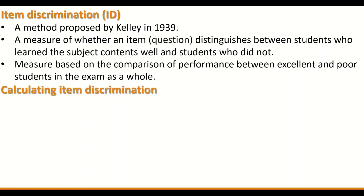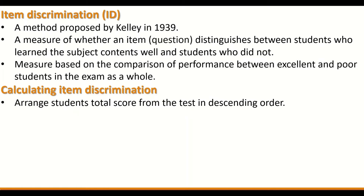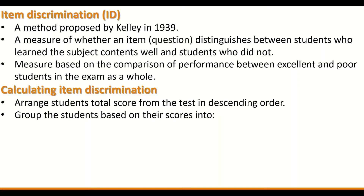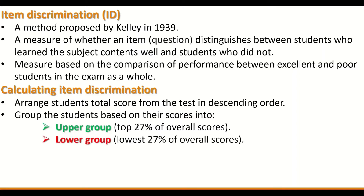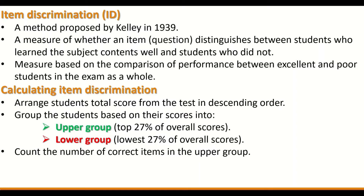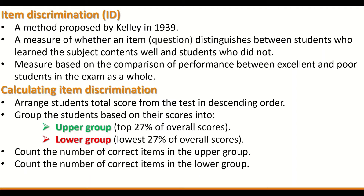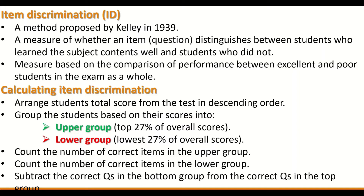Item discrimination is calculated by arranging the students' total scores from the test in descending order, then grouping the students based on their scores into an upper group and a lower group. The upper group contains the top 27% of overall scores and the lower group includes the lowest 27% of overall scores. Then count the number of correct items in the upper group and the lower group, and subtract the correct questions in the bottom group from those in the top group.